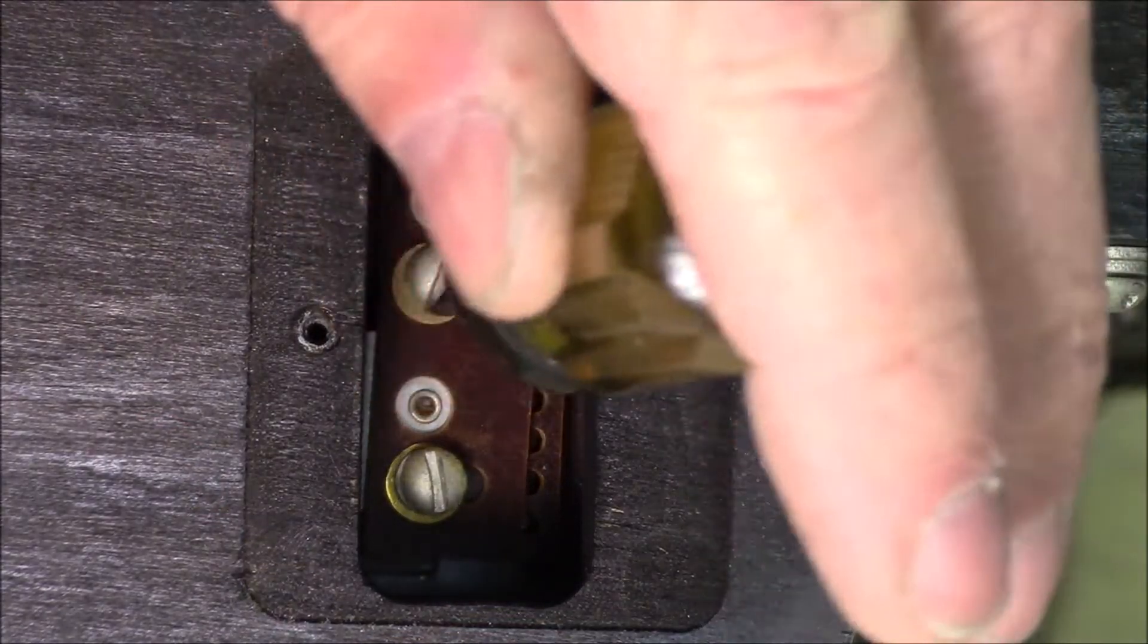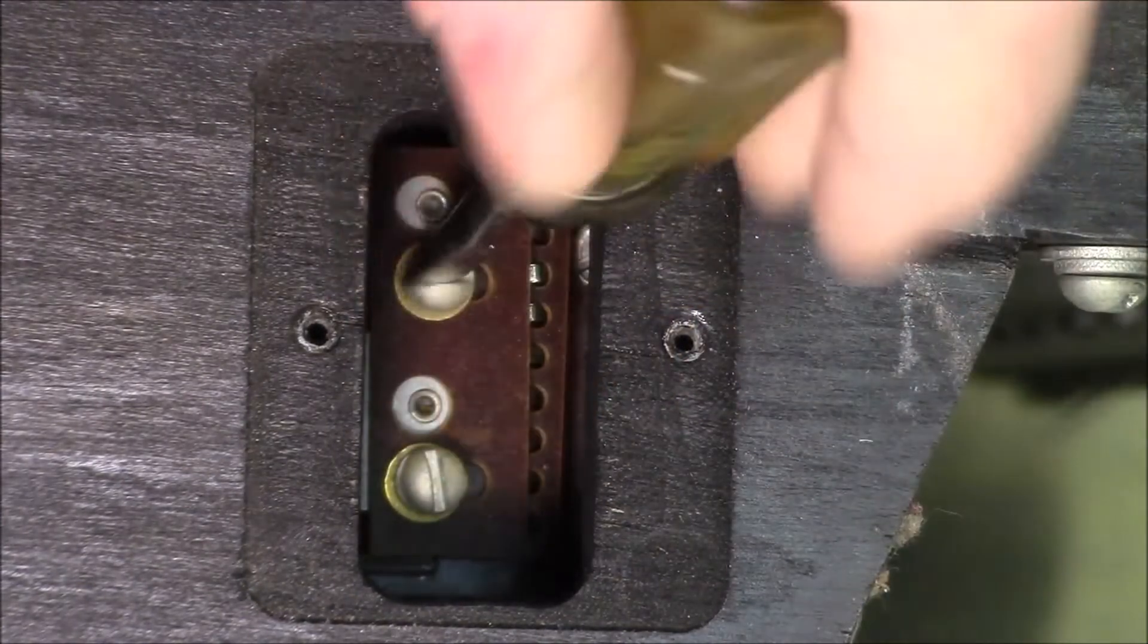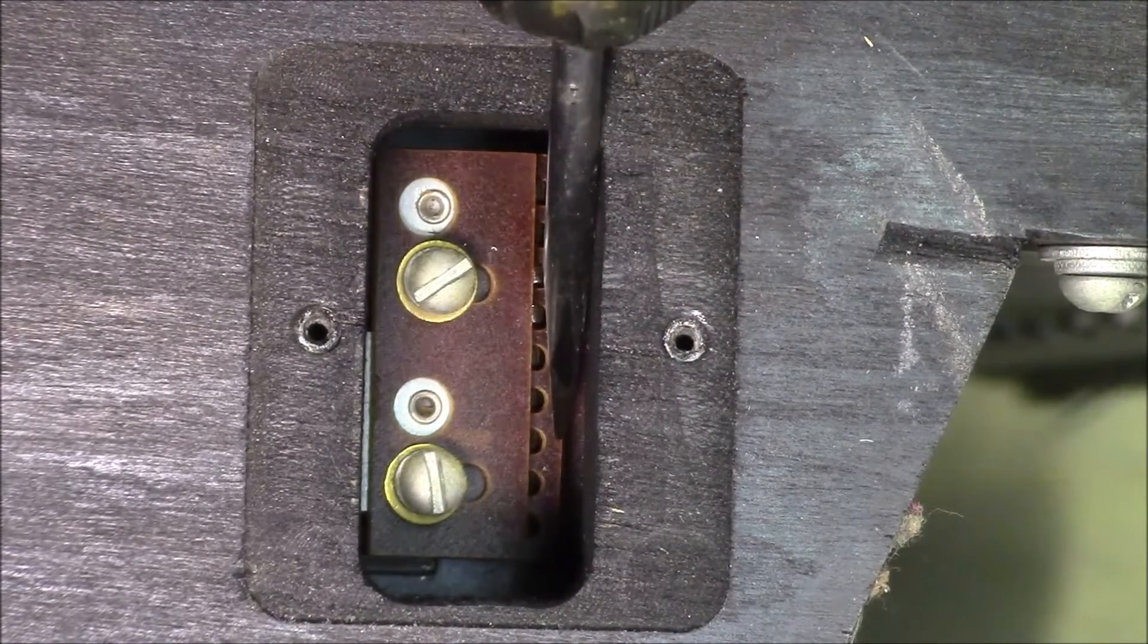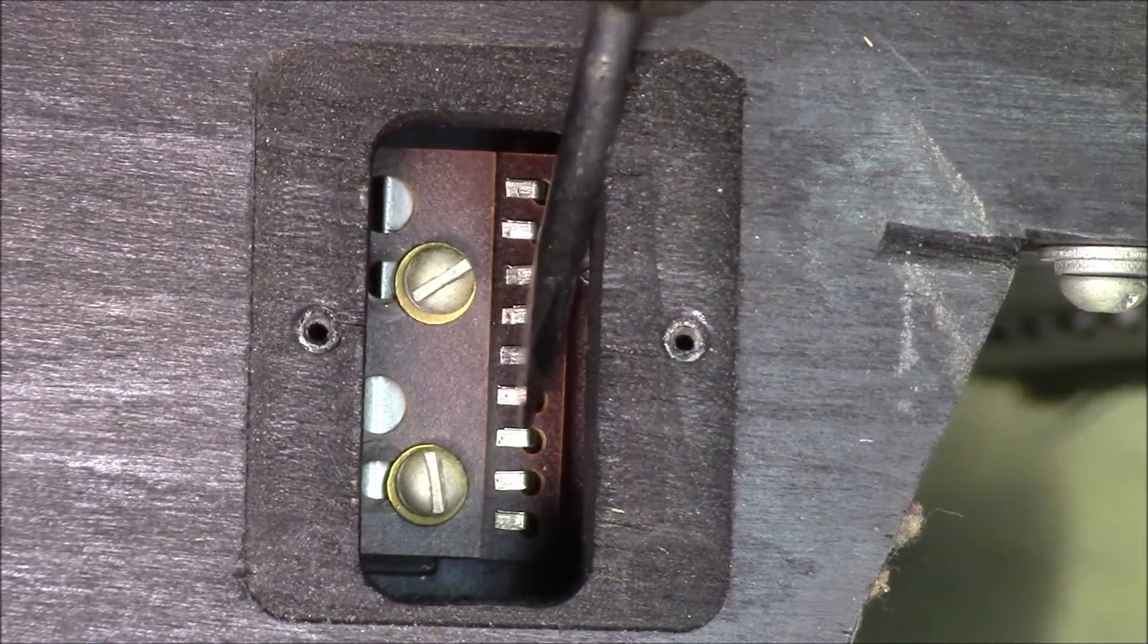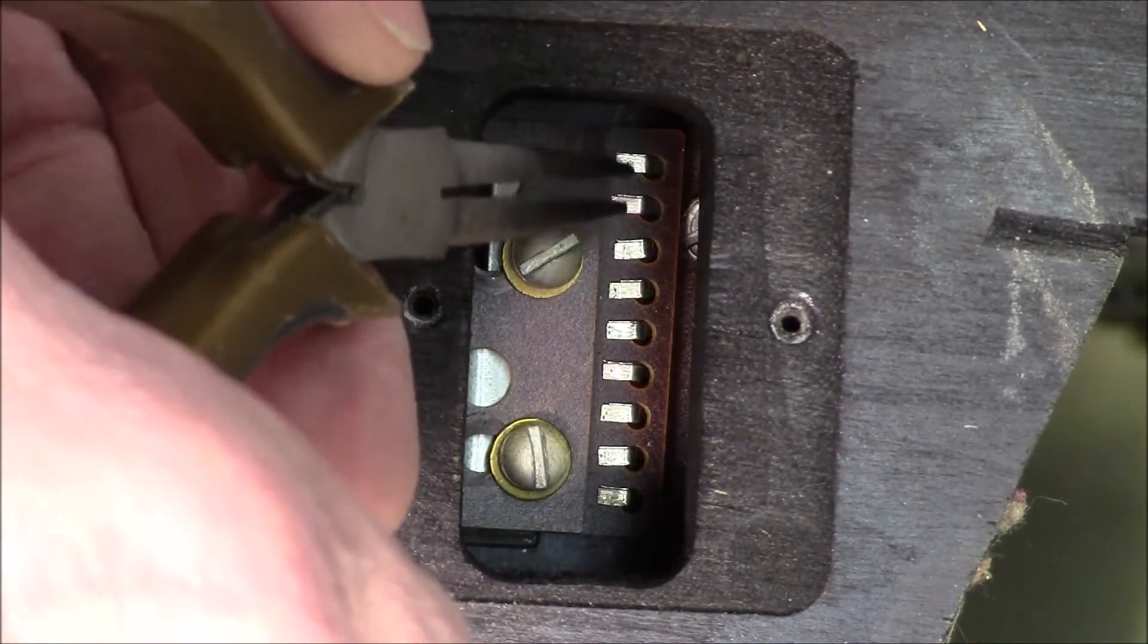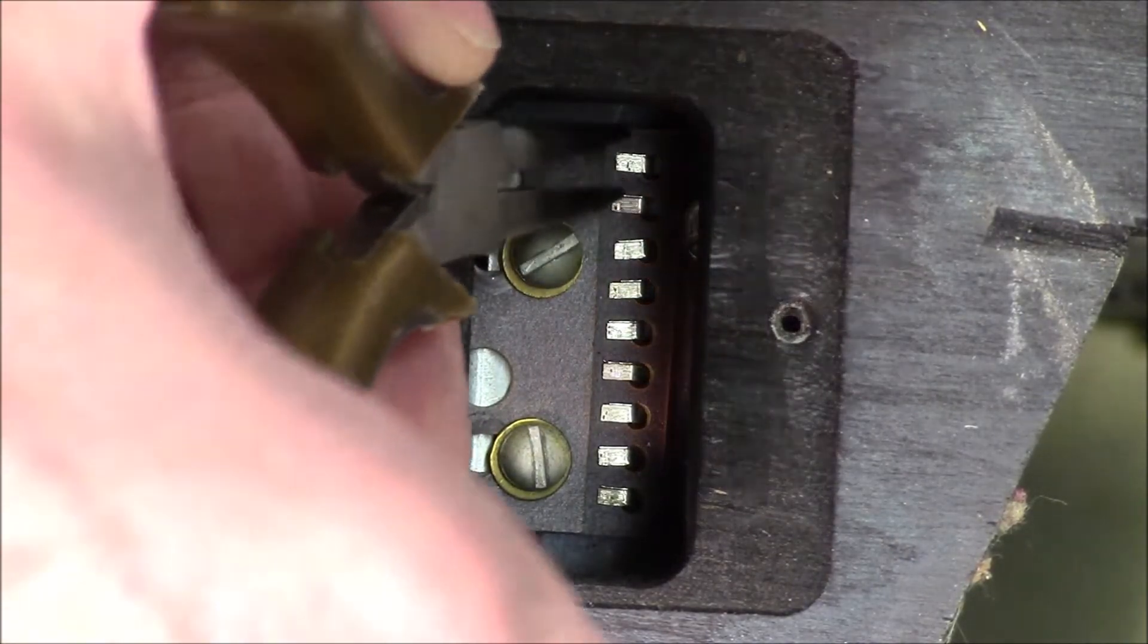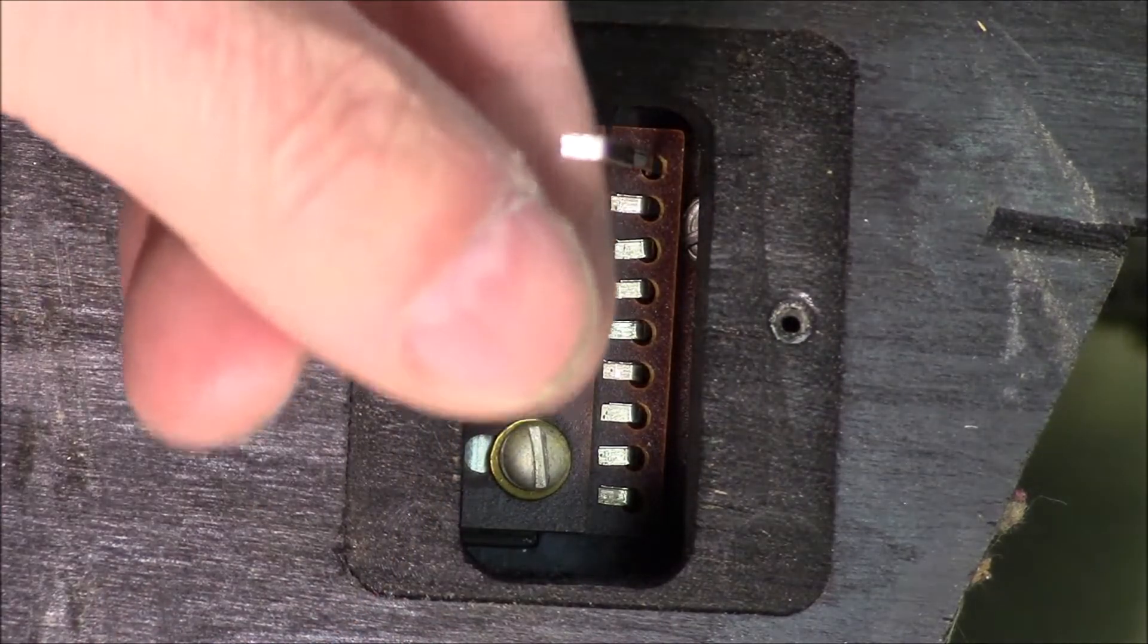So, underneath the cover plate on this earlier model keyboard, you can see on the upper keyboard, the screw that attaches the upper and lower manual has to be removed. I like to put a clamp on there. After I take this screw out, the upper and lower manual are no longer connected there, and they can come apart.